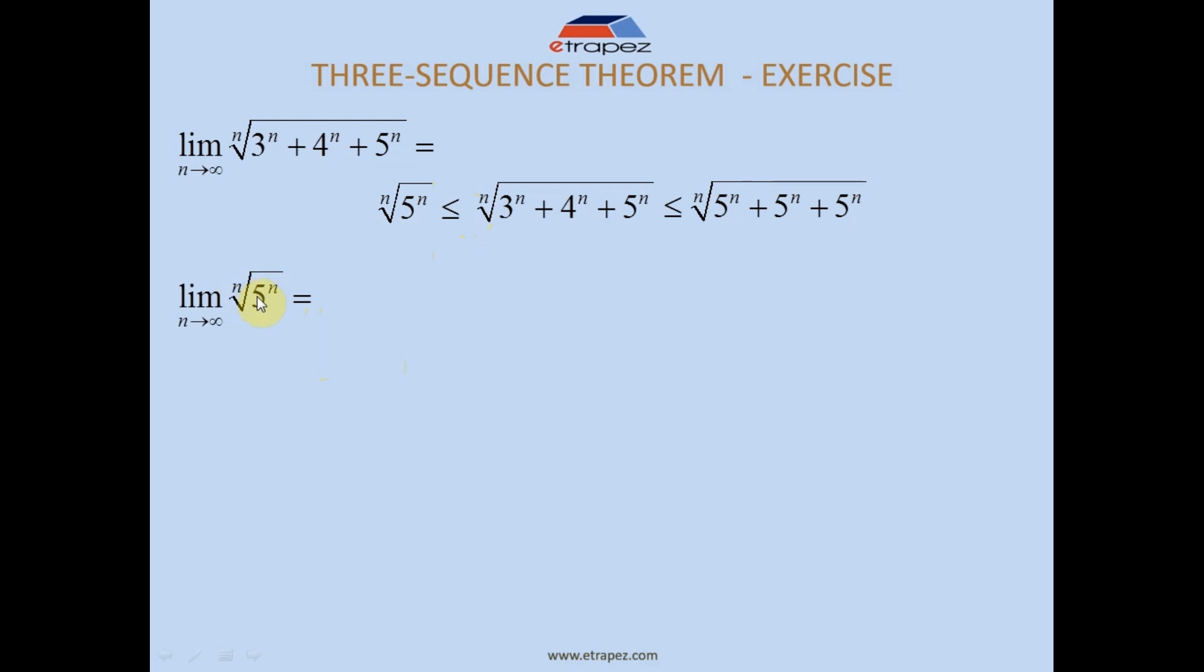Anyway, the cube root of 5³ would be 5, the fourth root of 5⁴ would be 5, and the nth root of 5^n is exactly 5. That's it - you don't need to specifically calculate this limit. So the limit from below turned out to be 5. Now you're calculating the limit from above.